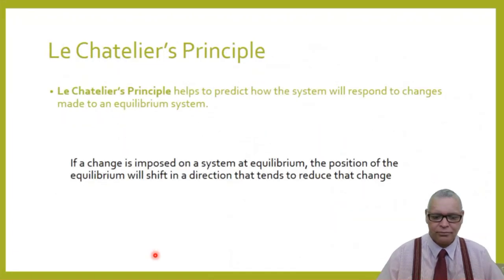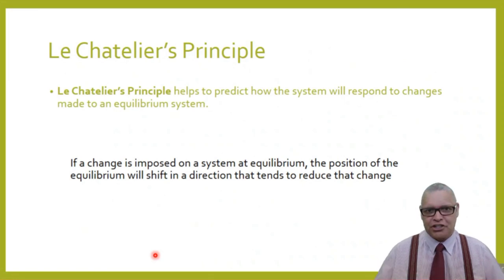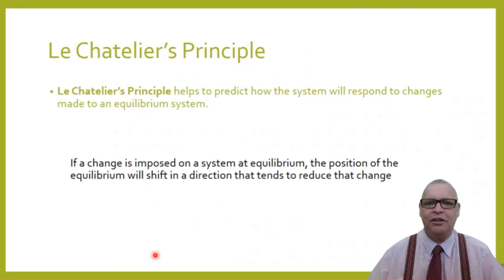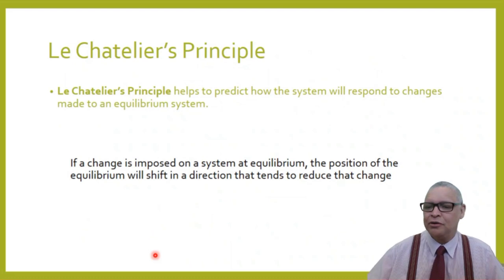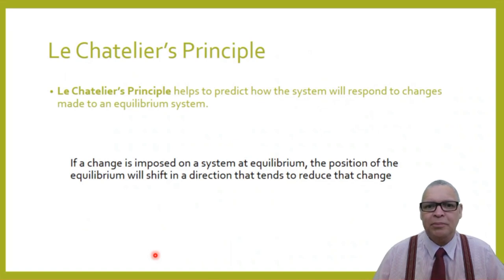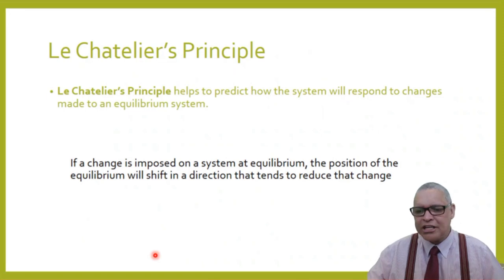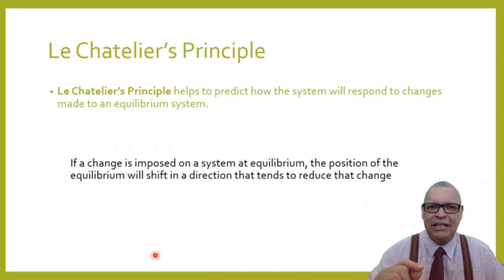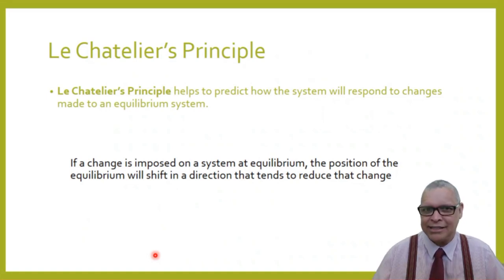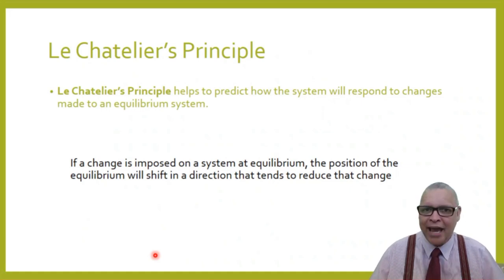The French have done a lot of experimentation in chemistry. One gentleman in particular, whose surname is Le Chatelier, studied chemical reactions in depth — not just the forward and reverse reactions — and formulated a principle based on his studies and discoveries. We know it today as Le Chatelier's principle.